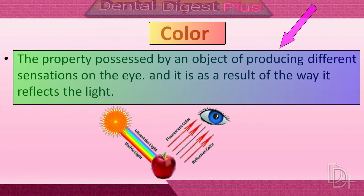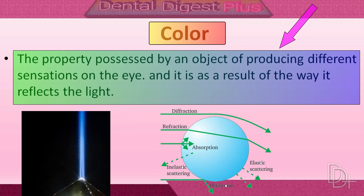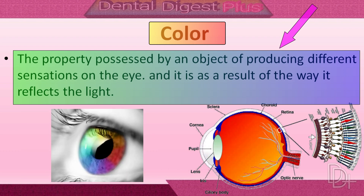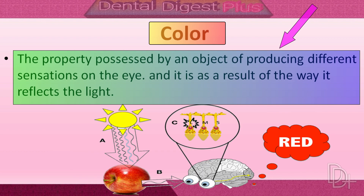Color is the property possessed by an object of producing different sensations on the eye, as a result of the way it reflects light. When a beam of light falls on the surface of an object, it is either reflected or transmitted. Sensation induced from light of varying wavelengths reaches the eye, and the cone cells in the retina distinguish objects based on the wavelengths of light they reflect. Light focused on the retina is converted into nerve impulses transmitted to the brain.